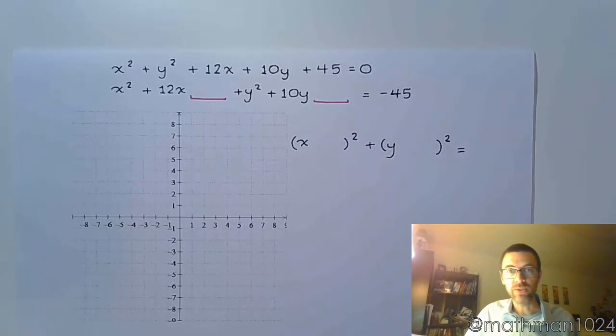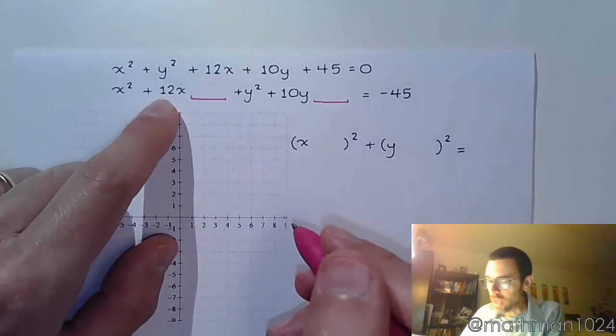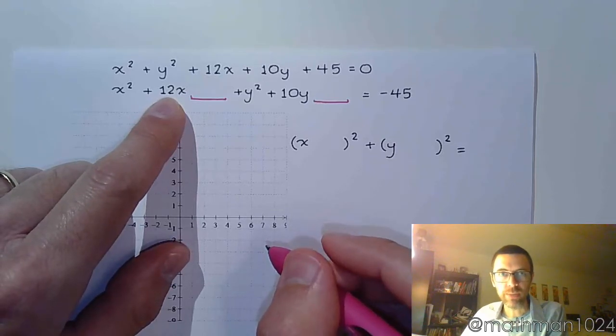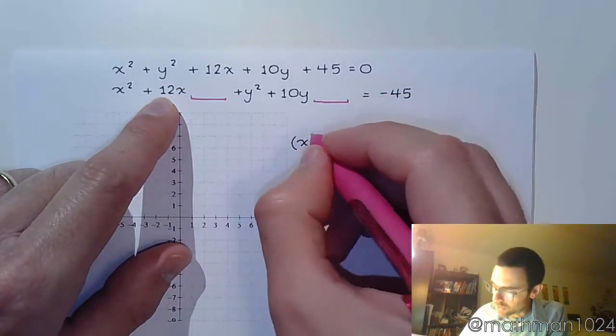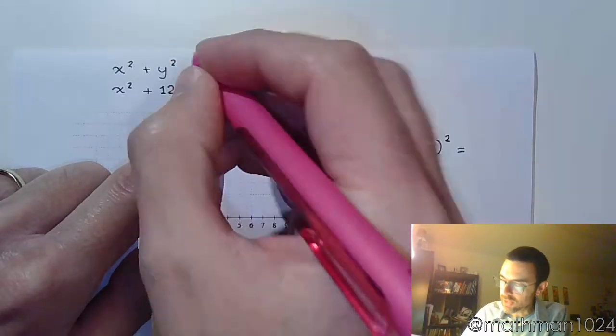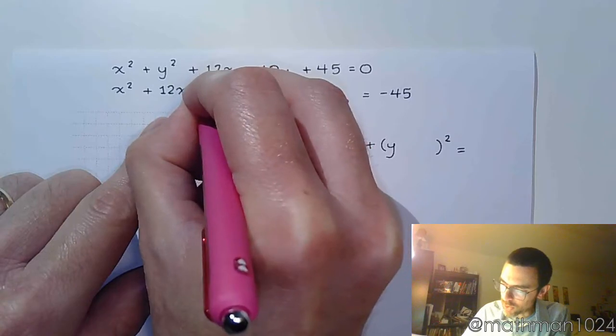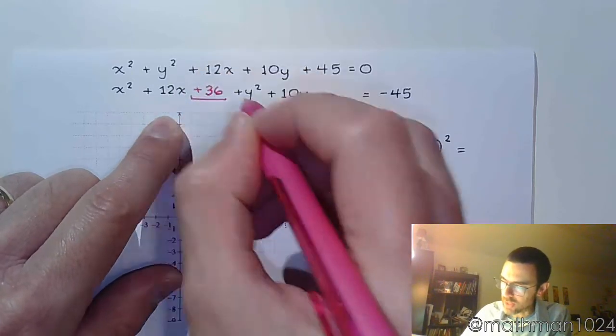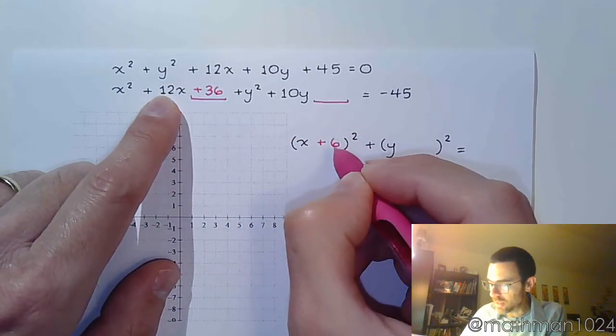So let's look at the x's. To complete this square, I'm going to divide this guy by 2. So 12 divided by 2 is 6, so put in plus 6. And then I square that 6 to get 36. So this is how we were completing the square earlier this semester. Divide 12 by 2 and then square that number.